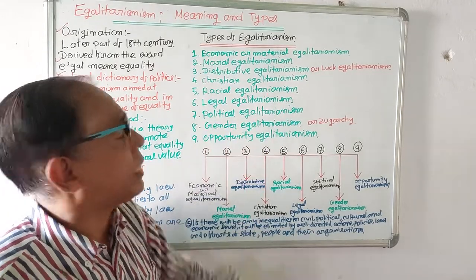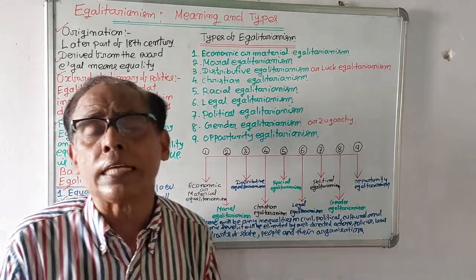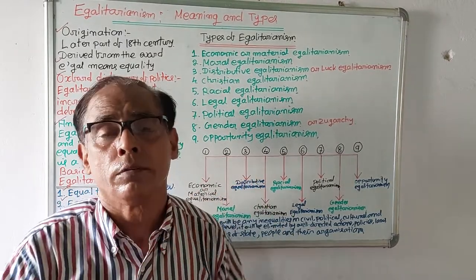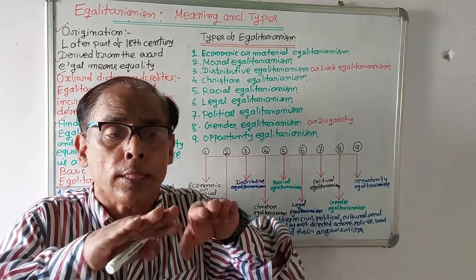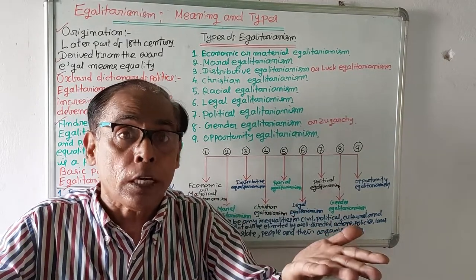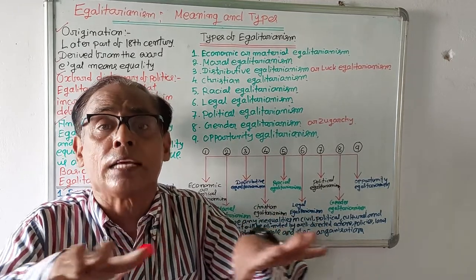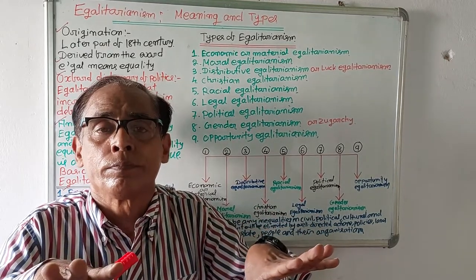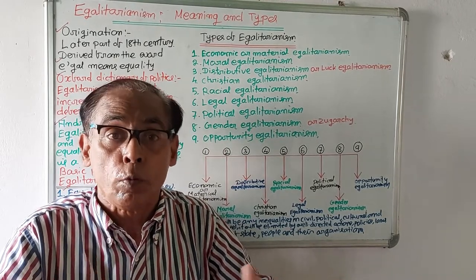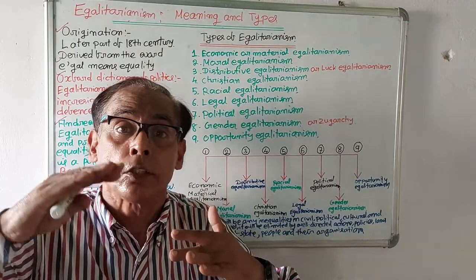Number four: Christian egalitarianism. Christian egalitarianism speaks that before God or Jesus all the people are equal — nobody is superior, nobody is inferior. Even male and female are equal, and both male and female will be given equal chance to lead the church.